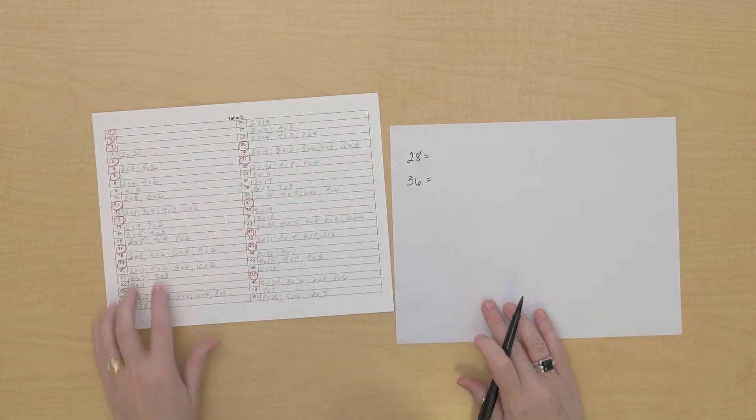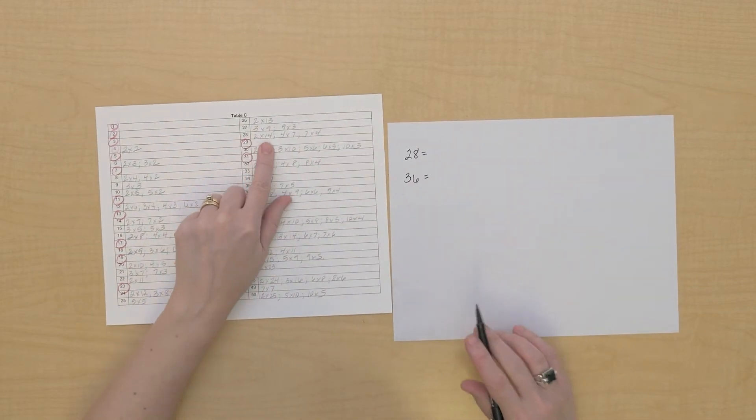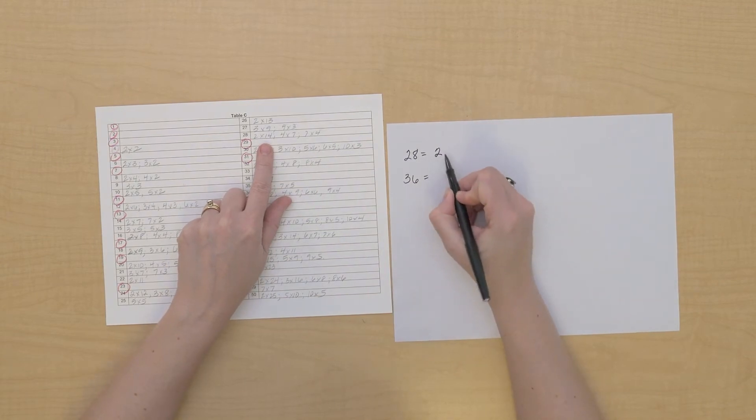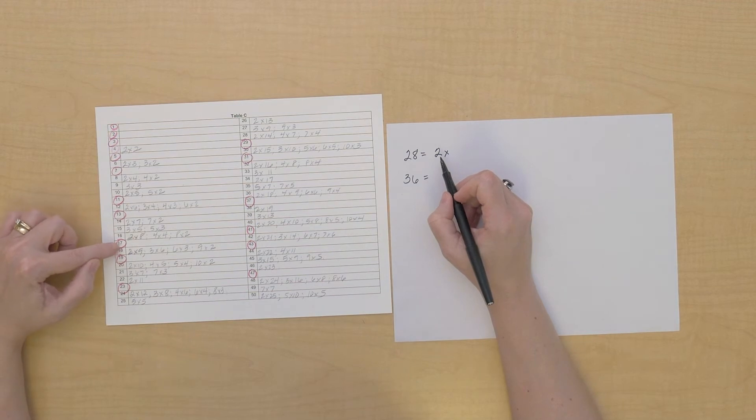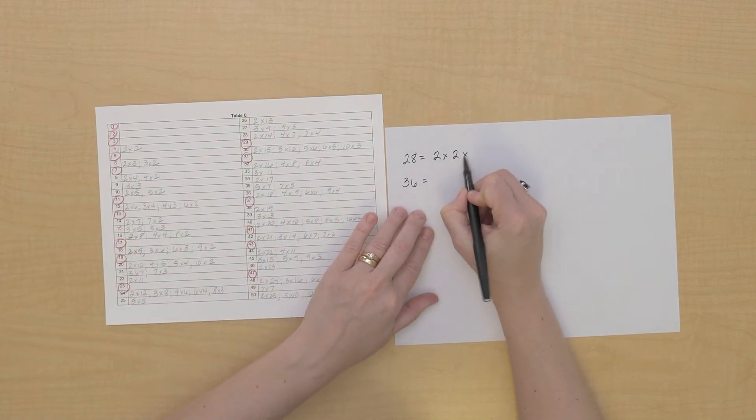Let's take a look at 28. I have 2 times 14, but I know 14 is not prime, so let's take a look at 14. We could do 2 times 7, that works.